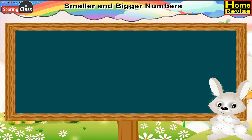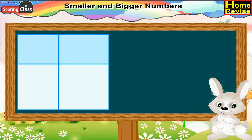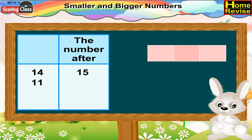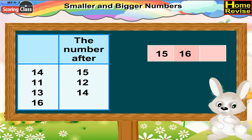Kids, we have learnt about 'before' and 'middle number.' Now, we will learn about the number after. Can you tell me which number comes after 14? If we start counting, it is 13, 14, 15. So 15 is the number. And what comes after 11? You are right — it is 12. What comes after 13? 14 it is. And what comes after 16? It is 17. You are a genius!